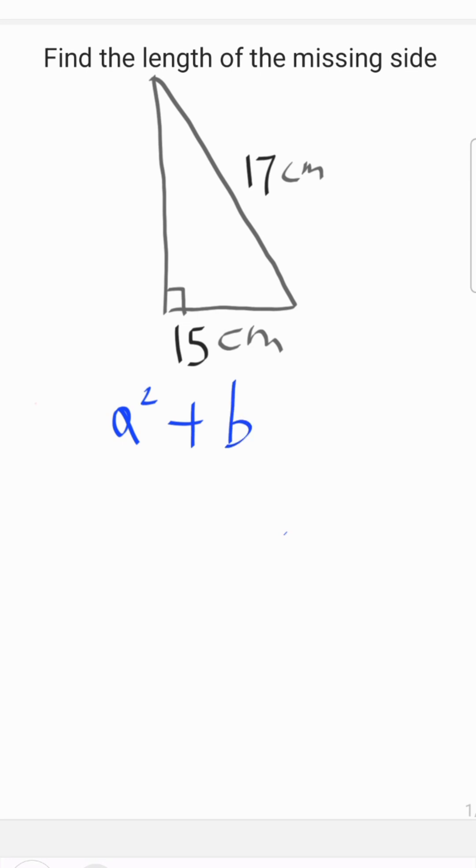We know the formula to be a squared plus b squared equals c squared. In this case, the c represents the longest side which always falls in front of the right angle.